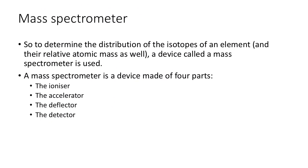To get the distribution and mass of each isotope for an element, we run it through what's known as a mass spectrometer. We're looking to get the distribution of isotopes as well as their relative atomic mass. It's made up of four parts: the ionizer, the accelerator, the deflector, and the detector.